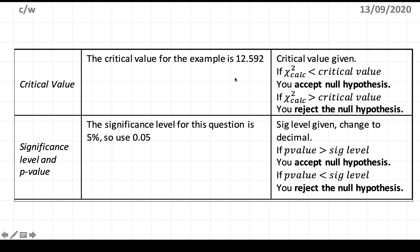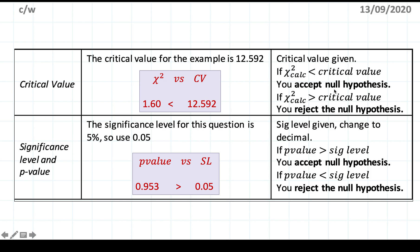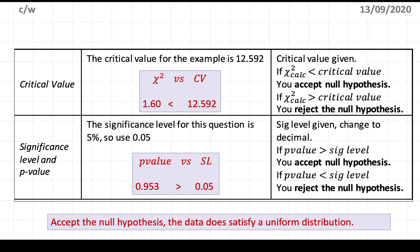For our question, the critical value is 12.592 and the chi-square value we got is 1.6, which means we accept the null hypothesis. Double-checking using the p-value: our p-value is 0.953, which is more than the significance level of 0.05. In conclusion, we accept the null hypothesis and the data does satisfy a uniform distribution. Usually this is much easier once you've mastered chi-square testing, but the tricky part is knowing which distribution to use and how to calculate the probabilities for each one.